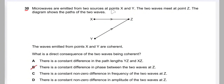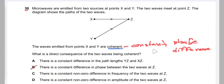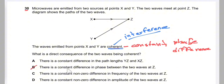Question 30: microwaves from two sources X and Y meet at point Z. The waves are coherent, meaning they have a constant phase difference. Coherence is required for interference to occur. The direct consequence of coherence is that there is a constant phase difference between the two waves at point Z. The answer is B.